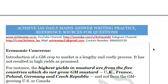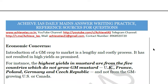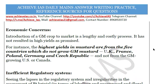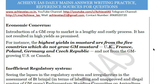Economic concerns also exist. The approval process for GM crops is lengthy and costly, and higher yields are not guaranteed. For example, the top five mustard-producing countries — UK, France, Poland, Germany, and Czech Republic — do not use GM mustard, whereas countries using genetically modified mustard such as the USA and Canada are not the highest producers.